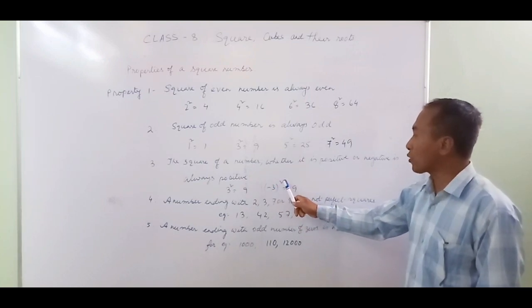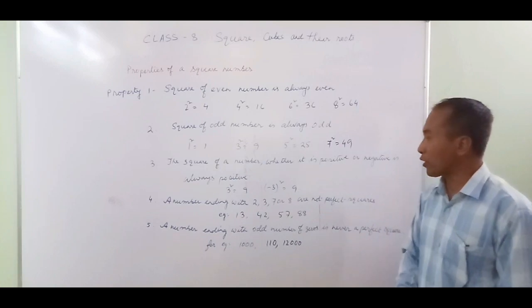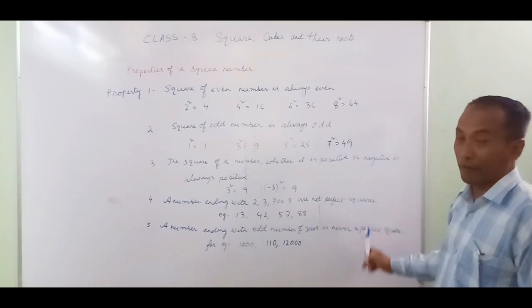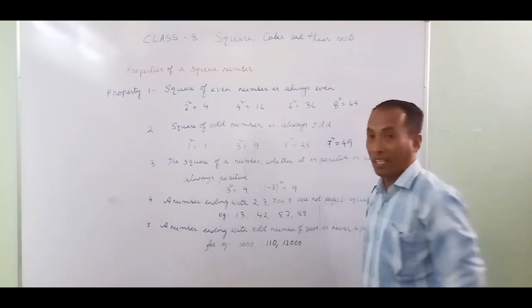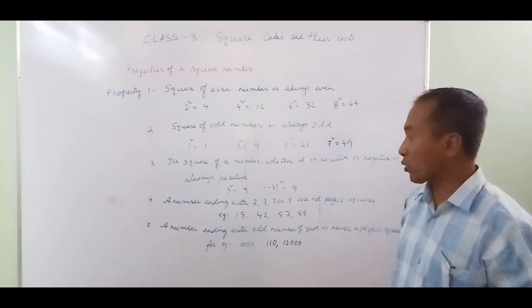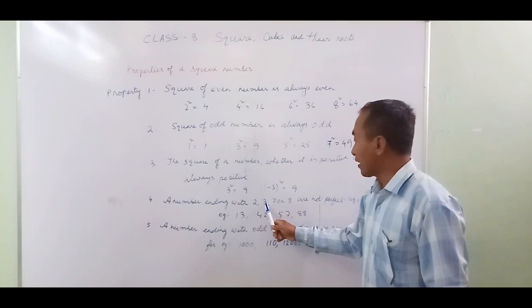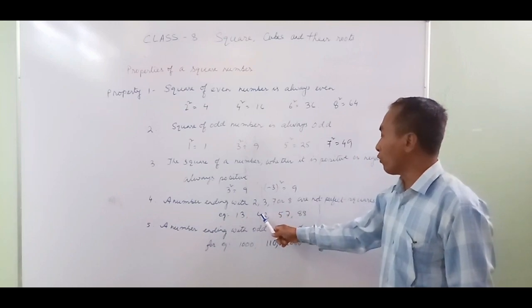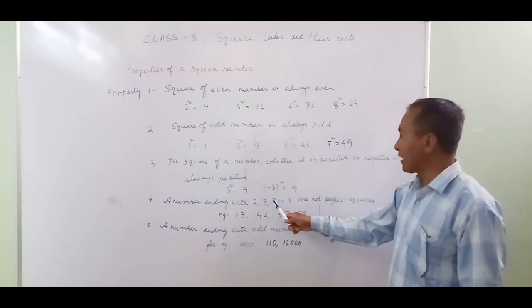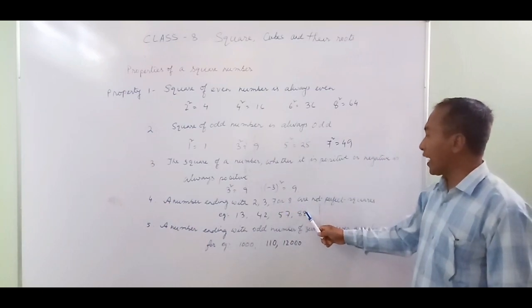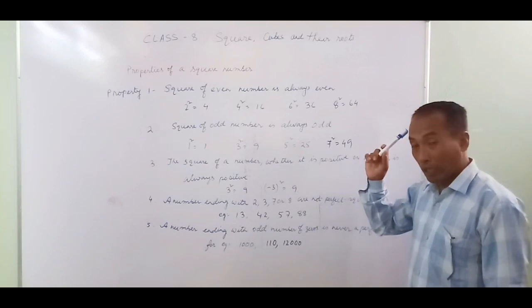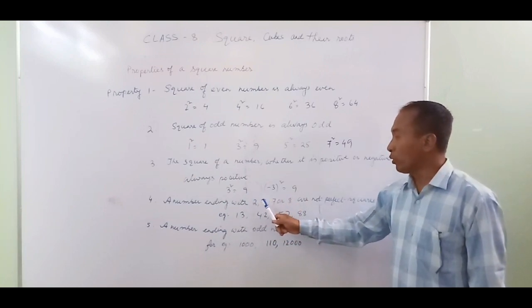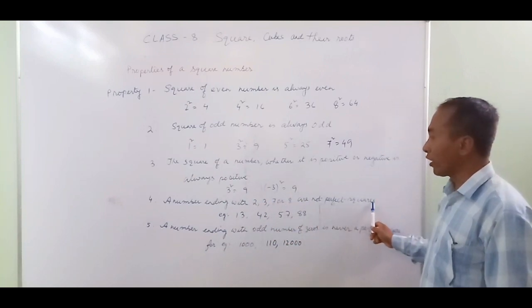Property 4: numbers ending with 2, 3, 7, or 8 are never perfect squares. For example, 313 ends with 3 — not a perfect square. 242 ends with 2 — not a perfect square. 57 ends with 7 — not a perfect square. 88 ends with 8 — not a perfect square. Remember: digits 2, 3, 7, 8 in the unit place mean the number cannot be a perfect square.